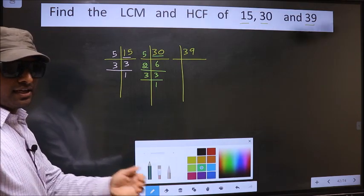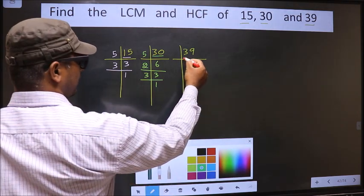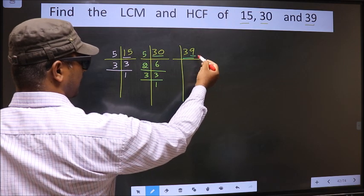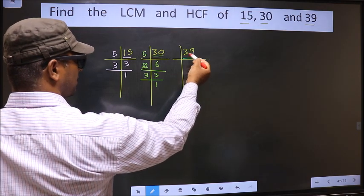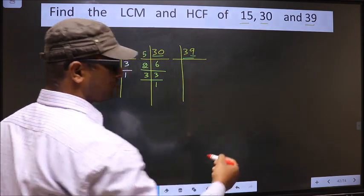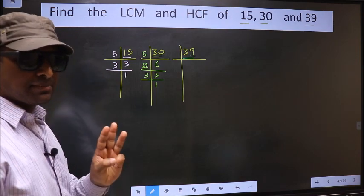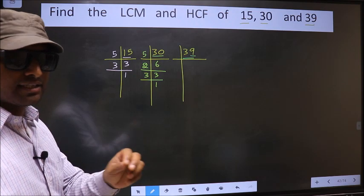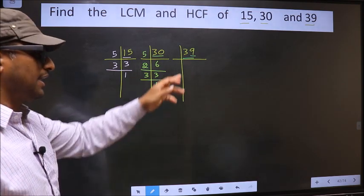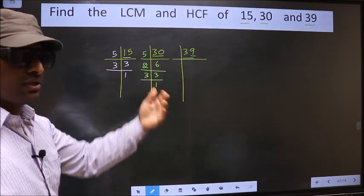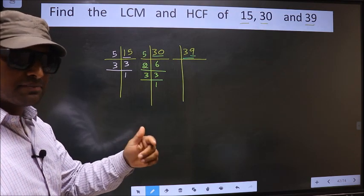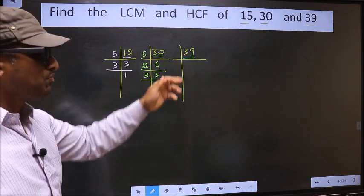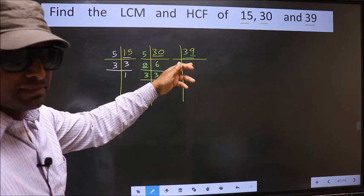Now the other number, 39. Last digit 9, not even, so this number is not divisible by 2. Next prime number, 3. To check divisibility by 3, we should add the digits. That is 3 plus 9, 12. Is 12 divisible by 3? Yes. So this number also divisible by 3.